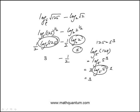So this becomes 3 over 2, which is one half times 3, minus one half, which equals 2 over 2, or just 1.